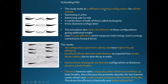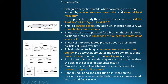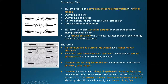They looked at four different schooling configurations for 2D infinite schools: swimming in a line, swimming side by side, a rectangular configuration combining both, and a diamond configuration. They also varied the distances in these configurations to get additional insight, and used Froude efficiency to measure whether each configuration was beneficial.